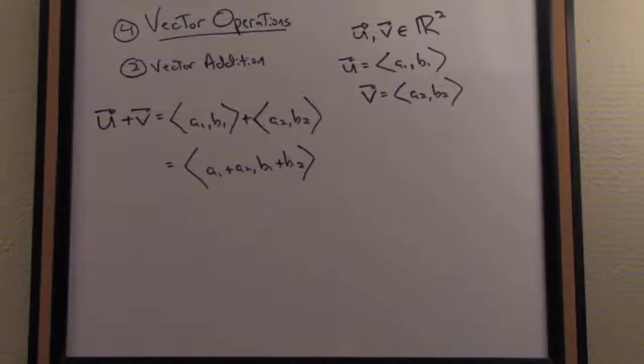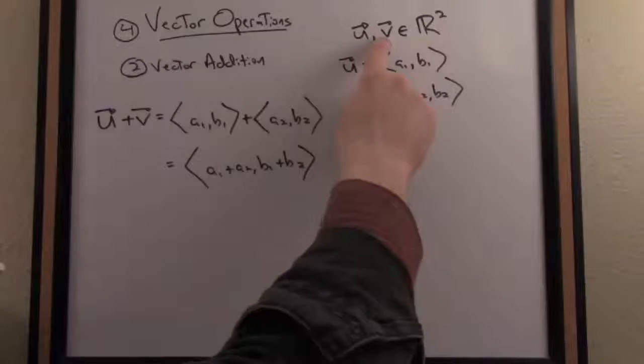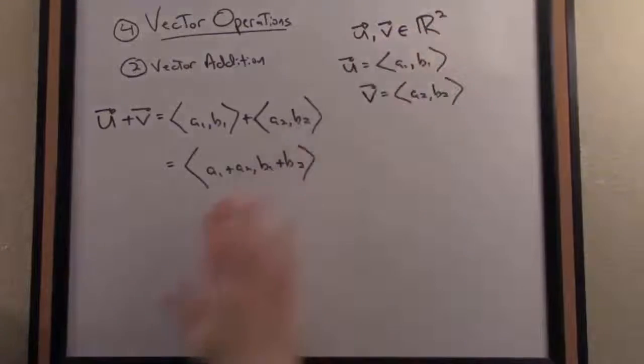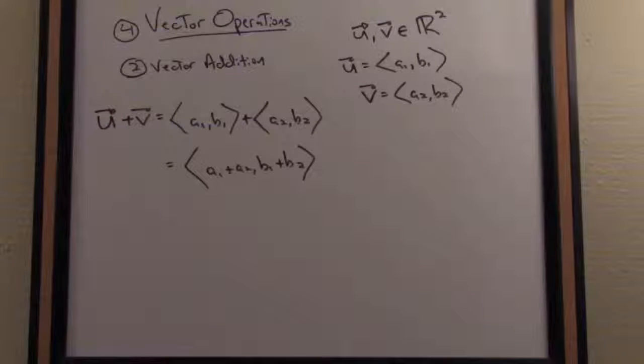That is it. And a nice aspect of this definition is that it extends for a higher dimensional vector. So if u and v, for instance, were in R3, I would add the components together respectively to get the resultant vector for vector addition, or any higher dimension for that matter.